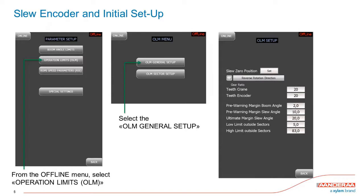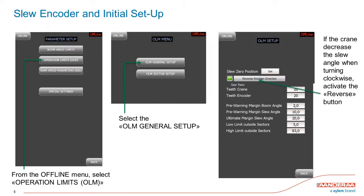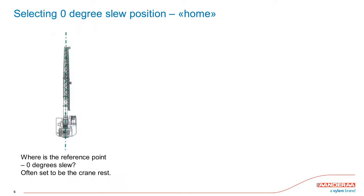Going into the general setup, you will have a setup menu. The first thing you do is actually slew the crane. If I slew the crane clockwise, I would expect the degrees of SLU angle to increase. If it decreases instead, something is wrong with the rotation. We don't know if the encoder is installed one way or the other, but if it's logically reversed, we can compensate by clicking on 'Reverse Rotation Direction.' When it goes green, you have logically turned the rotation direction.